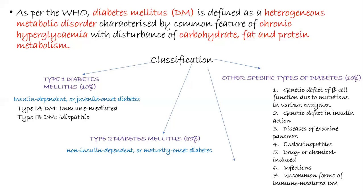The fourth class is gestational diabetes mellitus, a diabetic condition occurring in almost 4% of pregnant women. After delivering the baby, the person is generally cured of this diabetes mellitus, but there are chances that this person might develop diabetes again at a later stage in life.